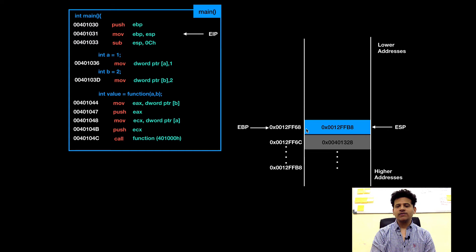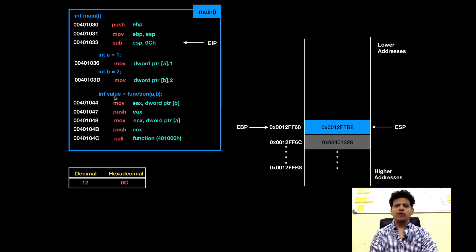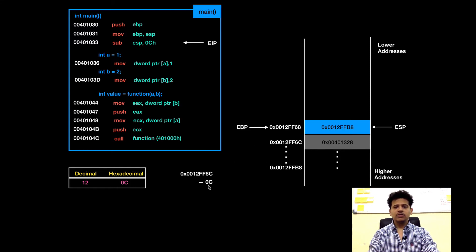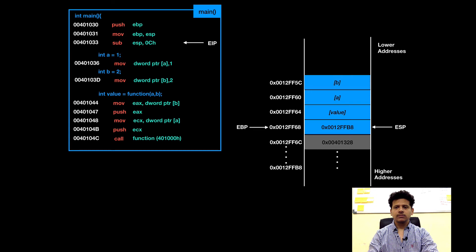From 0012FF68 it will be all main stack frame. On that stack frame, main will have its local variables, its registers and arguments that need to pass to another function. Next instruction is subtract 0C from the ESP. 0C's decimal value is 12. As we saw in the C program, main is defining 3 variables: integer a, integer b and integer value. By subtracting 12 bytes from the ESP, the space will be made to save 3 variables onto the stack. ESP is now 0012FF60. We have given storage to save 3 variables into the memory.